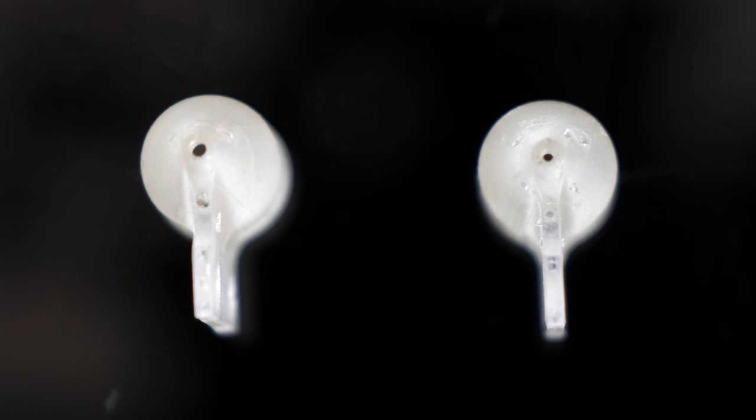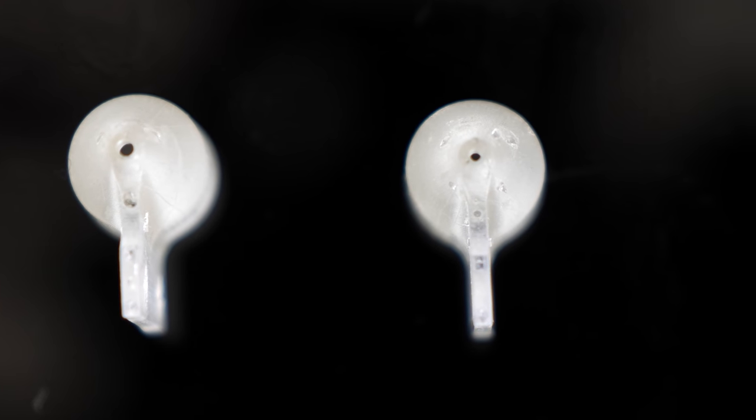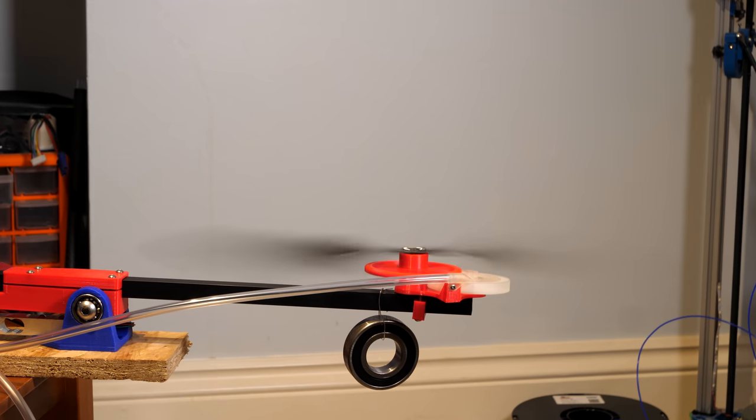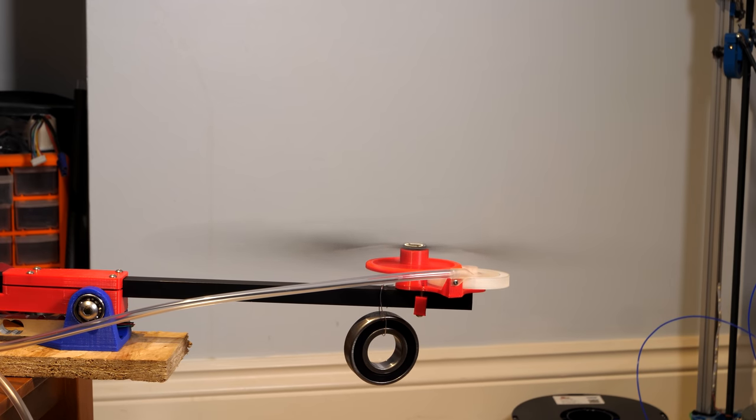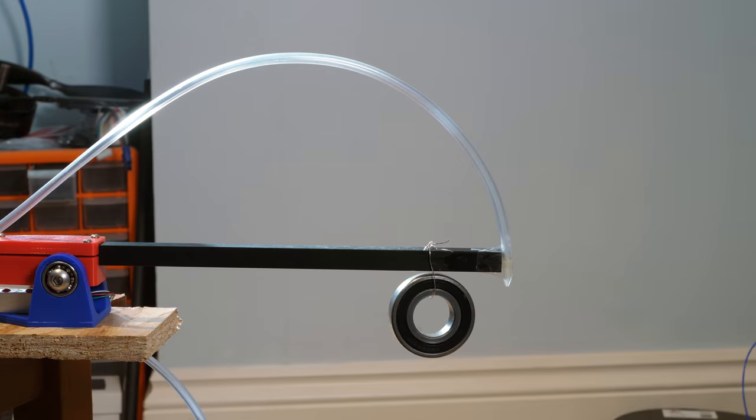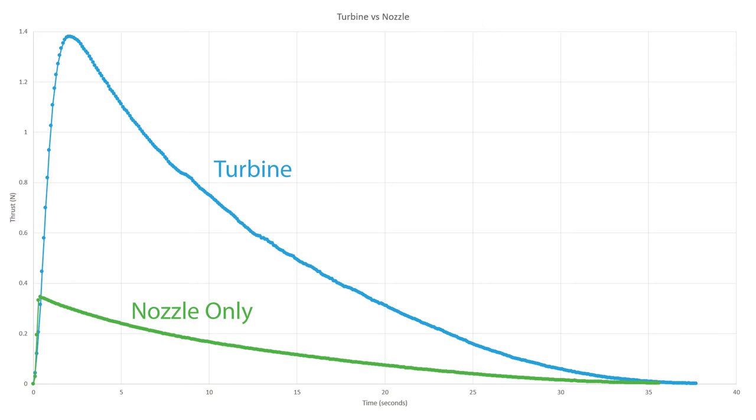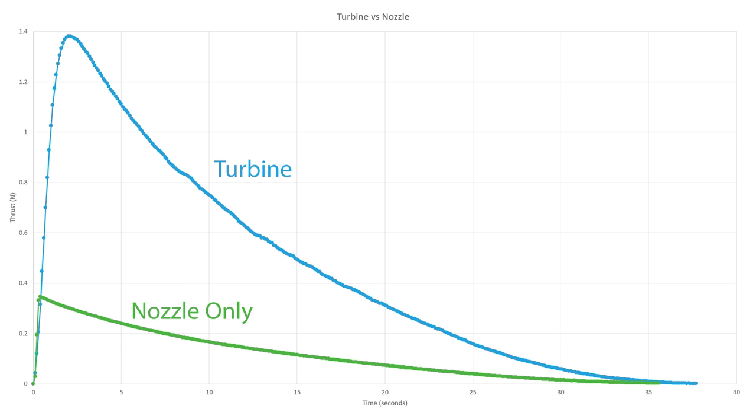This nozzle has half the cross-sectional area which means it produces about half as much thrust but for twice the duration. I'm sure you're wondering, surely the turbine has to be less efficient than just venting the air straight out the nozzle. Well fortunately we can easily test that. The straight through nozzle at 4 bar produced a peak thrust of 0.34 newtons and an impulse of 3.7 newton seconds, making the turbine four times more efficient than just the nozzle by itself. I'll leave you to figure out why in the comments down below.